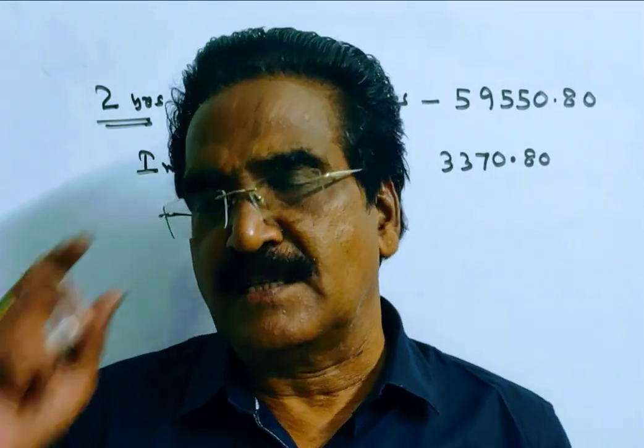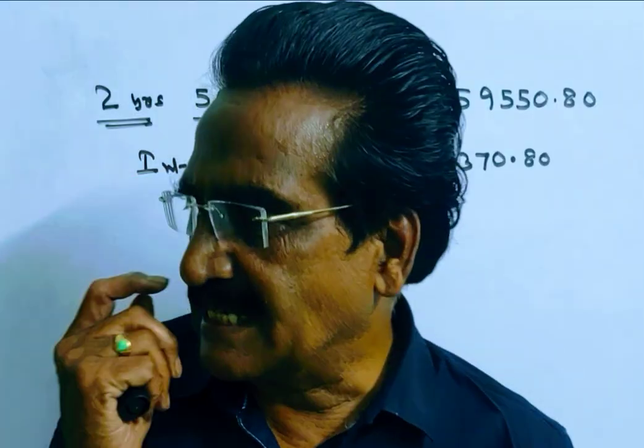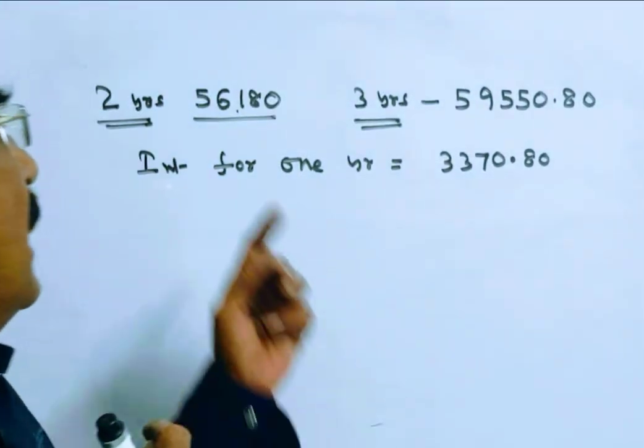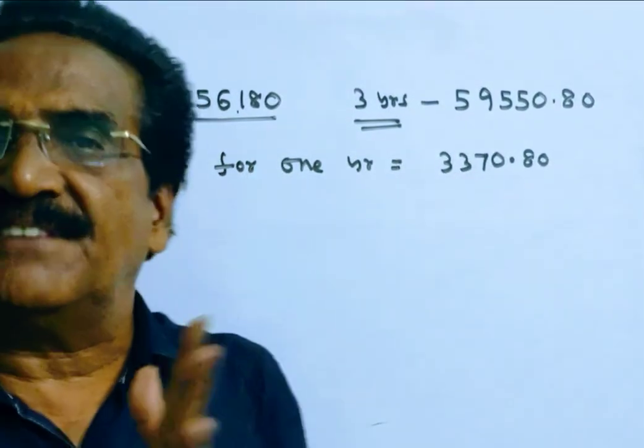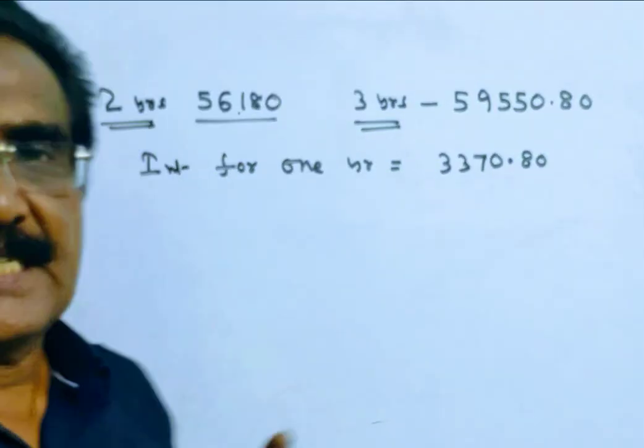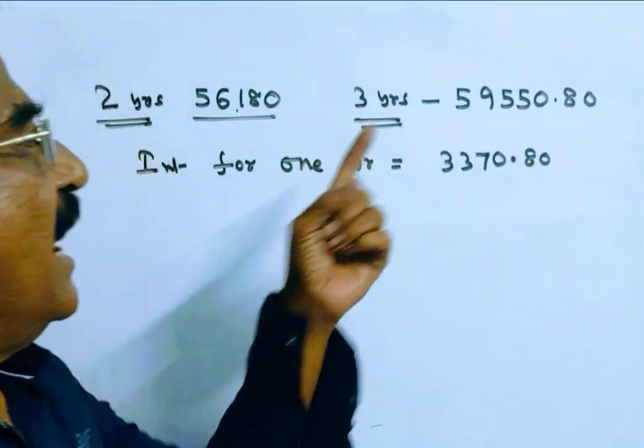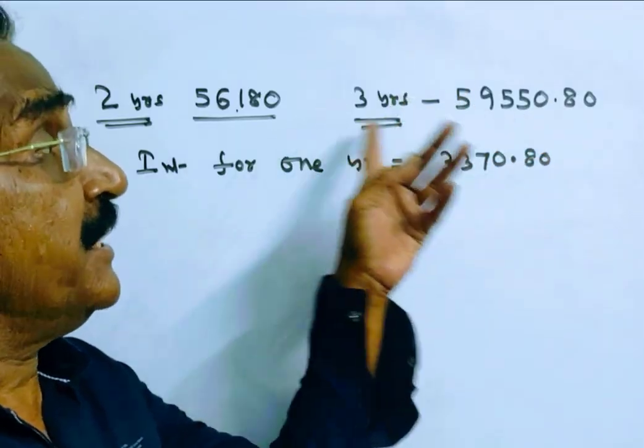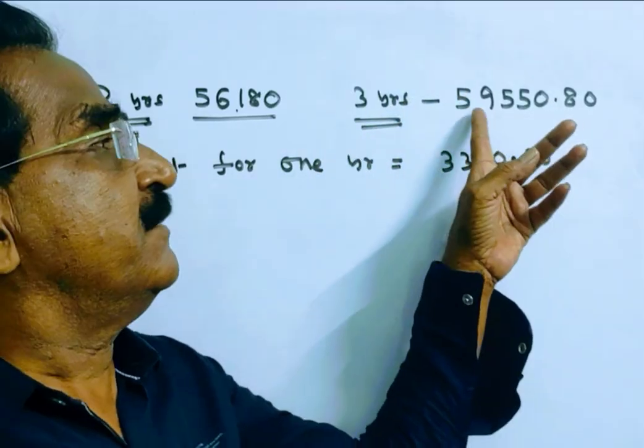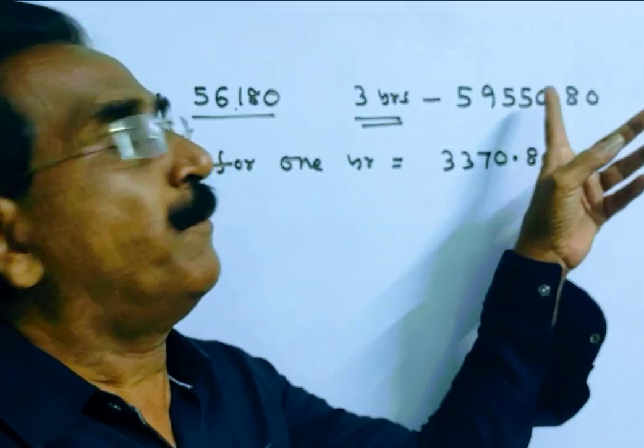Friends, the problem is given in the description box. A certain sum amounts to 56,180 in 2 years at compound rate of interest and in 3 years it becomes 59,550.80.